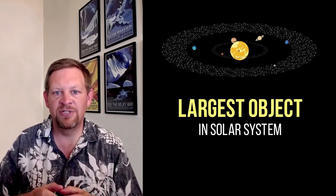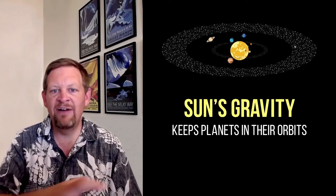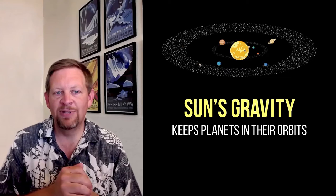The Sun is at the center of our solar system and all the planets orbit around it, and that's because it is the largest thing in the solar system. Most of the mass of the solar system is in the Sun, so its gravity keeps the planets in their orbits.